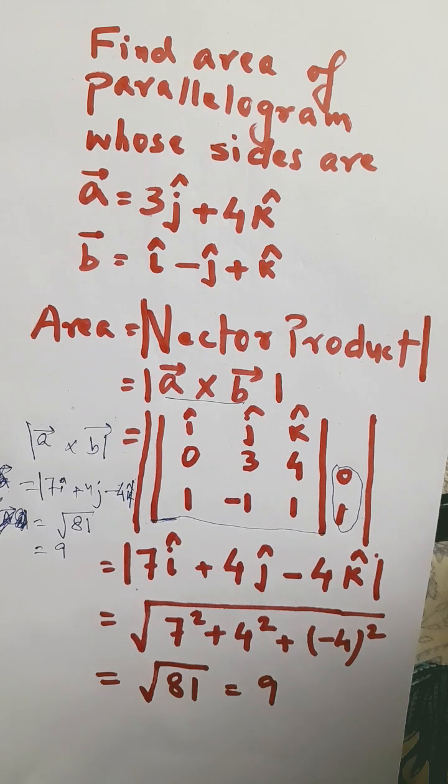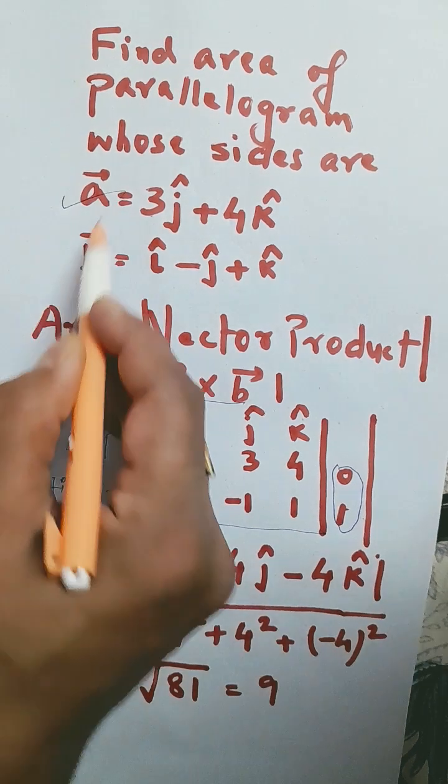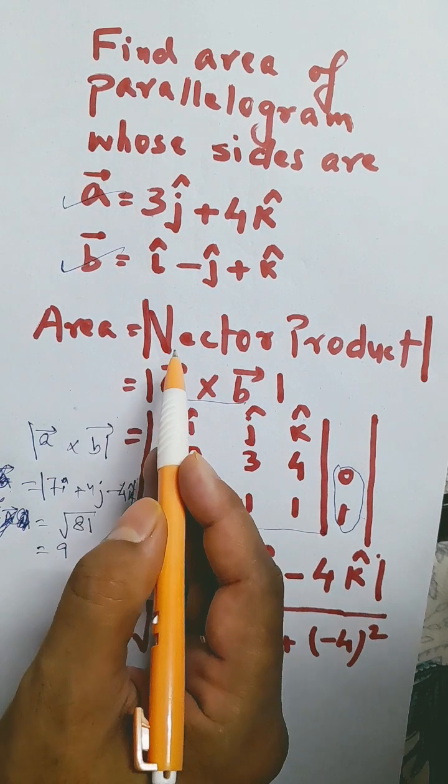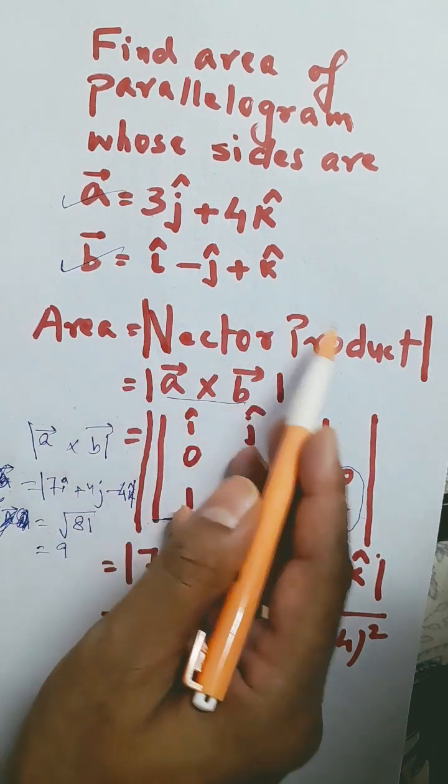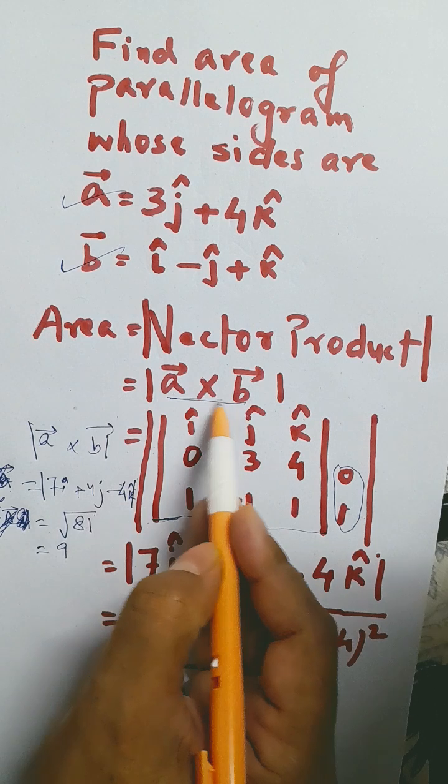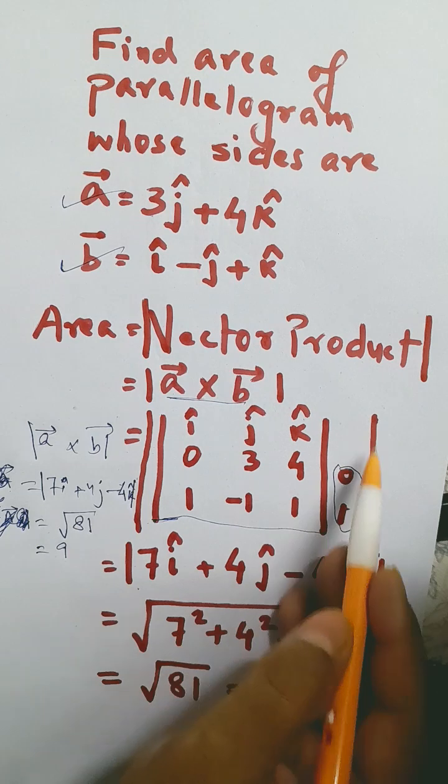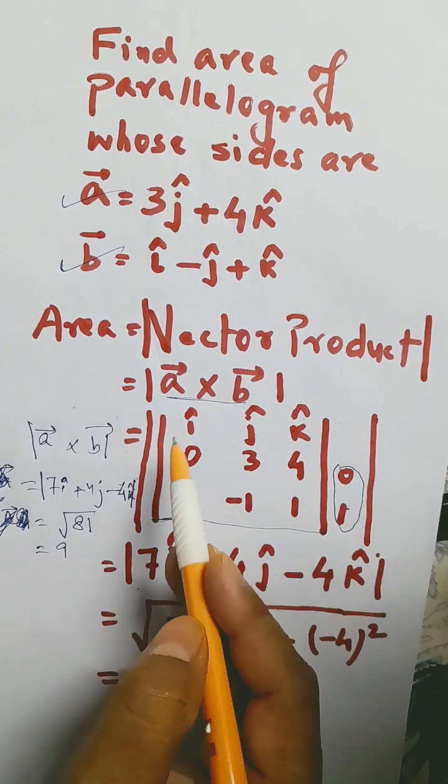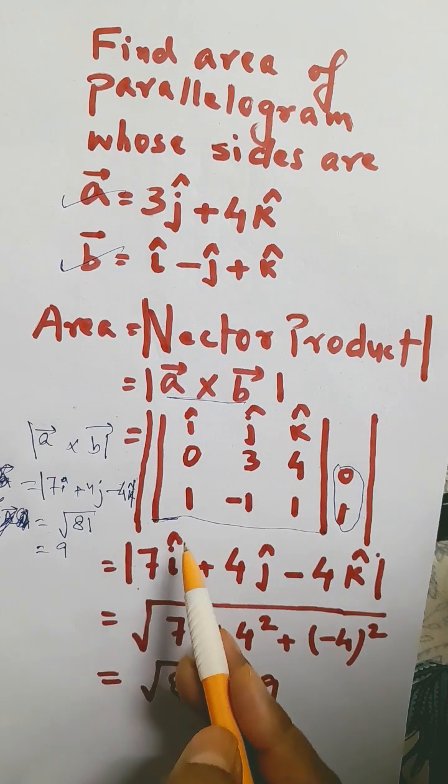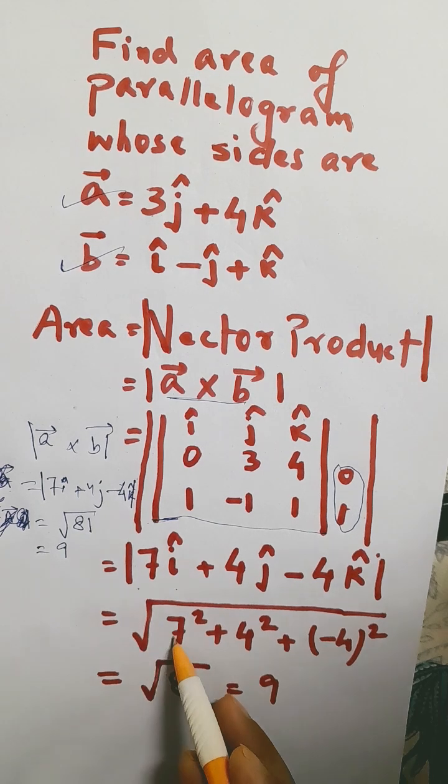The problem is: find area of parallelogram whose adjacent sides are two vectors a and b. You find the modulus of the vector product. The vector product is a cross b. You put the determinant, the vector product under modulus. Modulus of the vector product is the answer. You calculate by the determinant method.